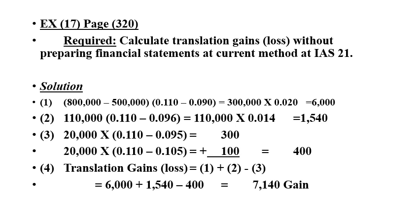For dividends: the first part of 20,000 was paid at June 1st, times the current rate 0.110 minus the historical rate 0.090. The second part, 20,000, times 0.110 minus the rate at December 1st, 0.105, giving 300 plus 100, equaling 400. Translation gain or loss equals step one plus step two minus step three: 6,000 plus 1,540 minus 400, giving a result of 7,140.